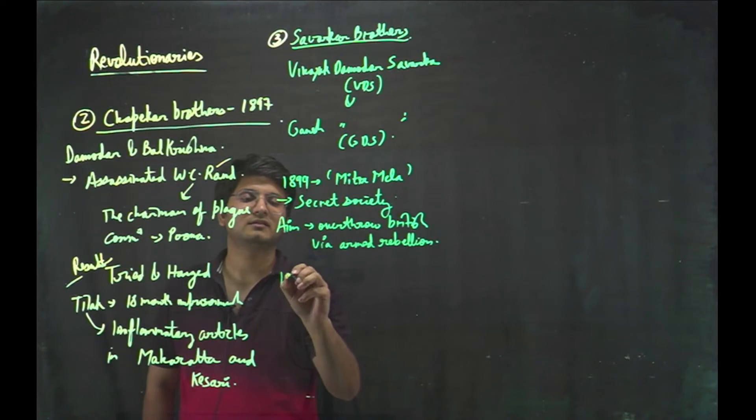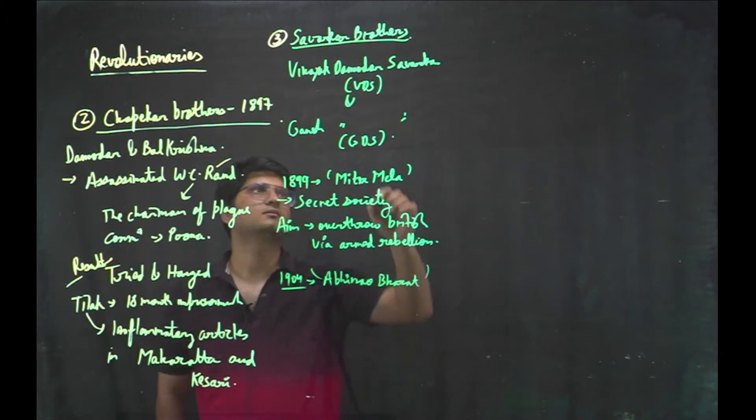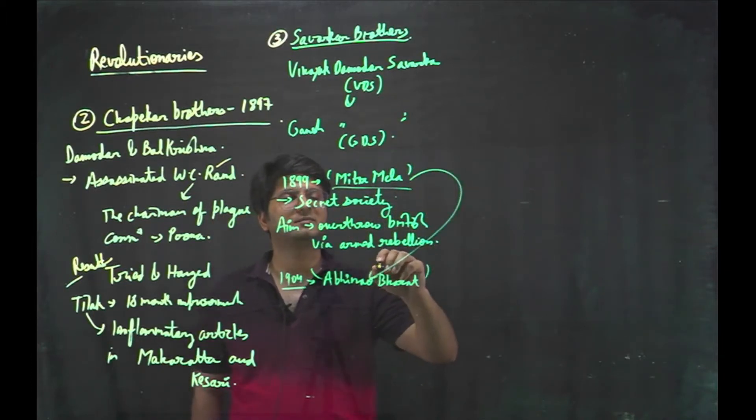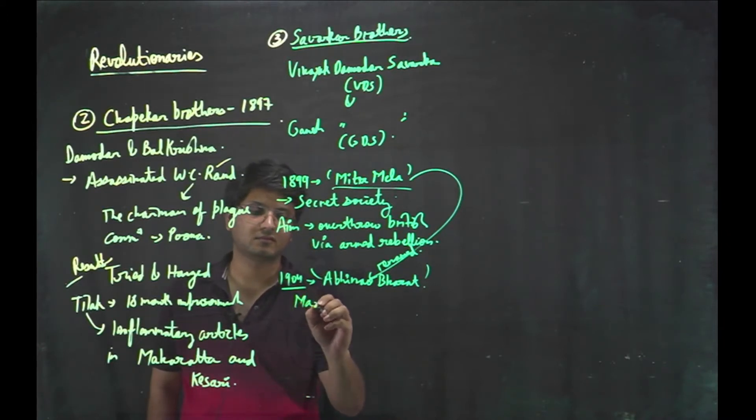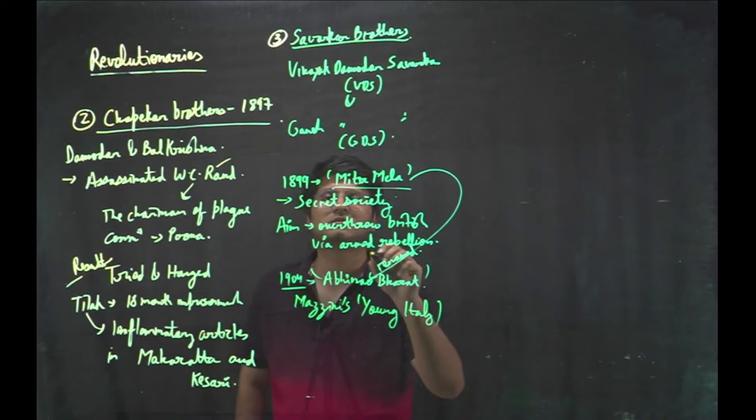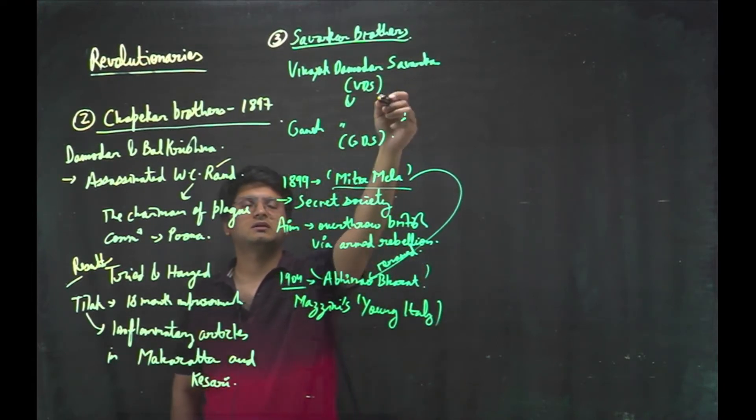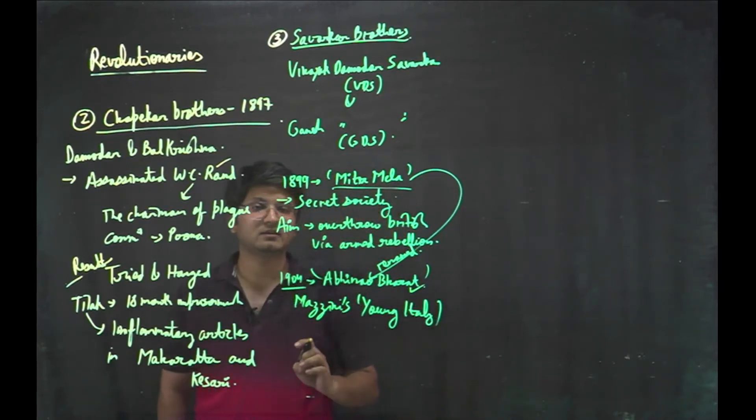Then in 1904, Abhinav Bharat, this Mitra Mela was renamed as Abhinav Bharat. On the lines of Mazzini's young Italy, Vinayak Damodar Savarkar, VDS. VDS was greatly inspired by Mazzini's technique of guerrilla warfare and formation of secret societies. So he formed the Abhinav Bharat. And then even after two years in 1906, he wrote Mazzini Charitra.